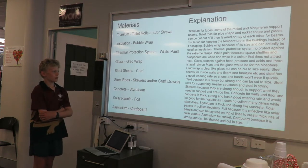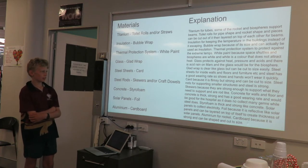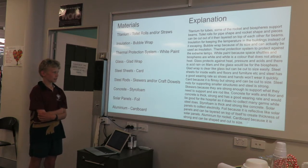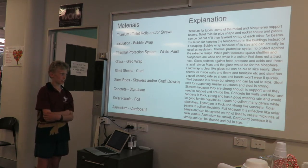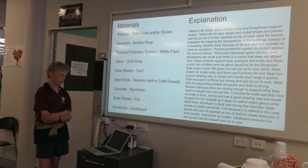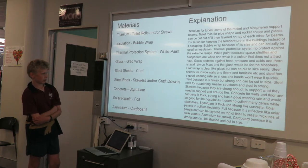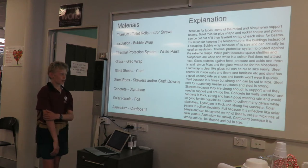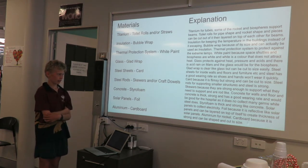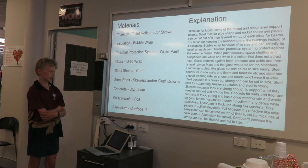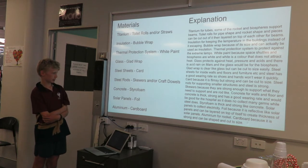Steel sheets for inside walls, floors, and furniture. Steel has a good wearing rate so shoes and hands won't wear it quickly. Card is flimsy but strong and can be cut to size. Steel rods are for supporting smaller structures, and steel is strong. Concrete for walls and floors — concrete is thick, strong, and has a good wearing rate, and will be good for hospitals as it does not collect many germs, while steel does.